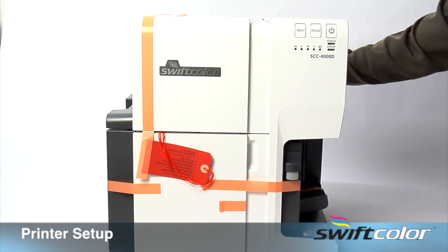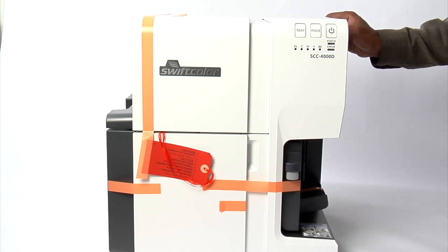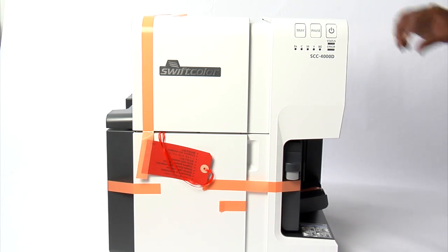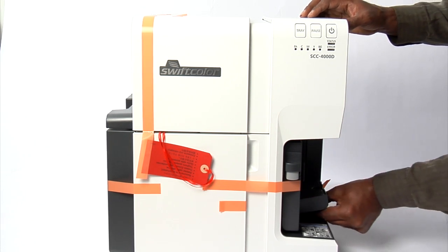SCC 4000D printer setup. Remove the orange shipping tape and tags from the front, back, both sides and inside the printer. Carefully pull the tape and tags until all have been removed. You can discard the tape.